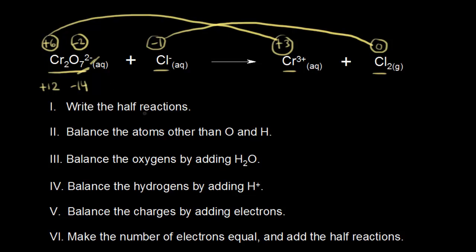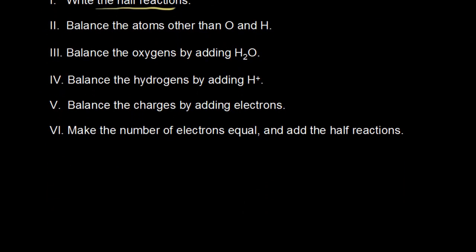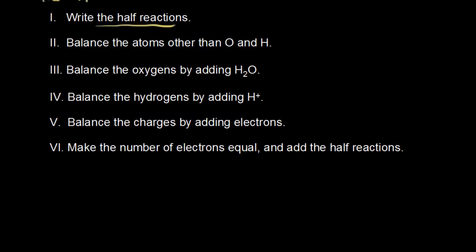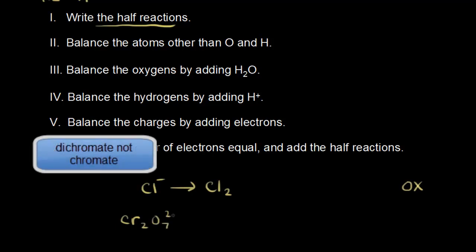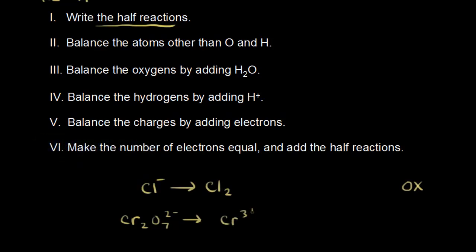In terms of balancing it, our first step is to write the different half reactions — an oxidation half reaction and a reduction half reaction. We had the chloride anion going to chlorine, and that's our oxidation half reaction. Our reduction half reaction involved chromium: the dichromate anion Cr2O7 2- going to chromium 3+. So that's step one: write the different half reactions.